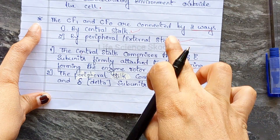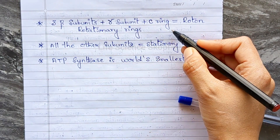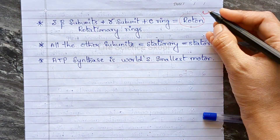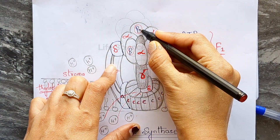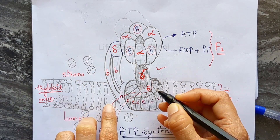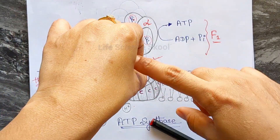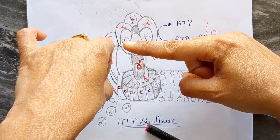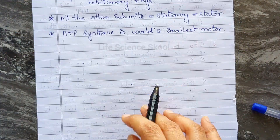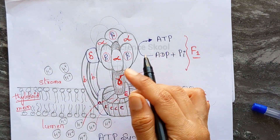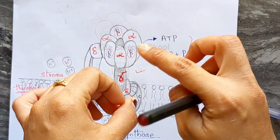These two connections are very important. The three beta subunits, the gamma subunit, and the c-ring together form the rotor — the rotatory components. These are the parts that rotate. All the remaining subunits — alpha, delta, b, and a — are stationary; they do not move. These stationary components are called the stator.